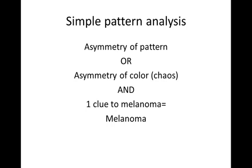Let's do some cases with simple pattern analysis. What is simple pattern analysis? It's chaos and clues. What is chaos? Chaos is asymmetry of pattern or asymmetry of color. If chaos is present, then we look for clues. And if we find one clue to melanoma in a chaotic lesion, we excise the lesion to exclude the possibility of melanoma. Let's look at some examples.